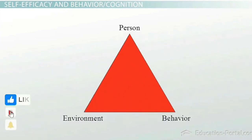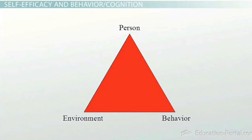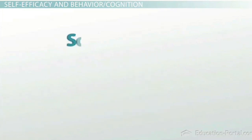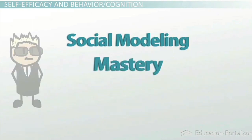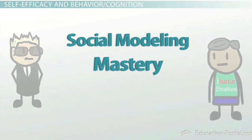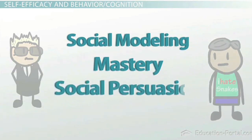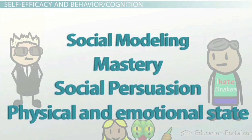There are four ways of developing a strong sense of self-efficacy. One way is social modeling — people see others like themselves being successful. Mastery is another example; people achieve goals and overcome failures, and this is an important part of increasing self-efficacy. Social persuasion is the third example: when people are persuaded by others that they can succeed, this positively impacts their self-efficacy. Finally, a person's physical and emotional state can help them accurately read their own abilities to be successful in an activity or assignment.